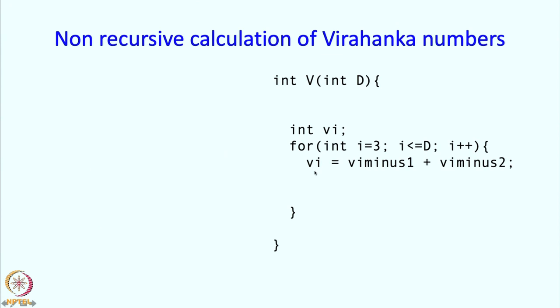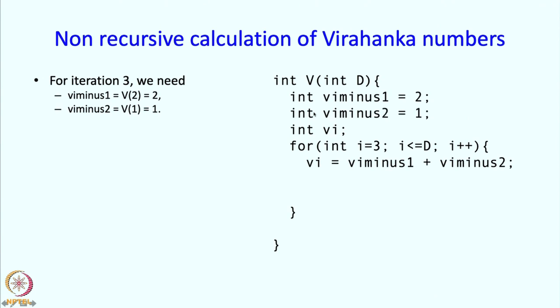Now I have to fill up the rest of the code over here. So let us see. In iteration 3, when we first enter this loop, what do we need? We are going to calculate V3. I is going to be 3, so we want to calculate V3 over here. So at that point we need this to be V2 and we need this to be V1. So these values will get set only above, outside the loop. Therefore we should initialize these variables to 2 and 1 respectively.